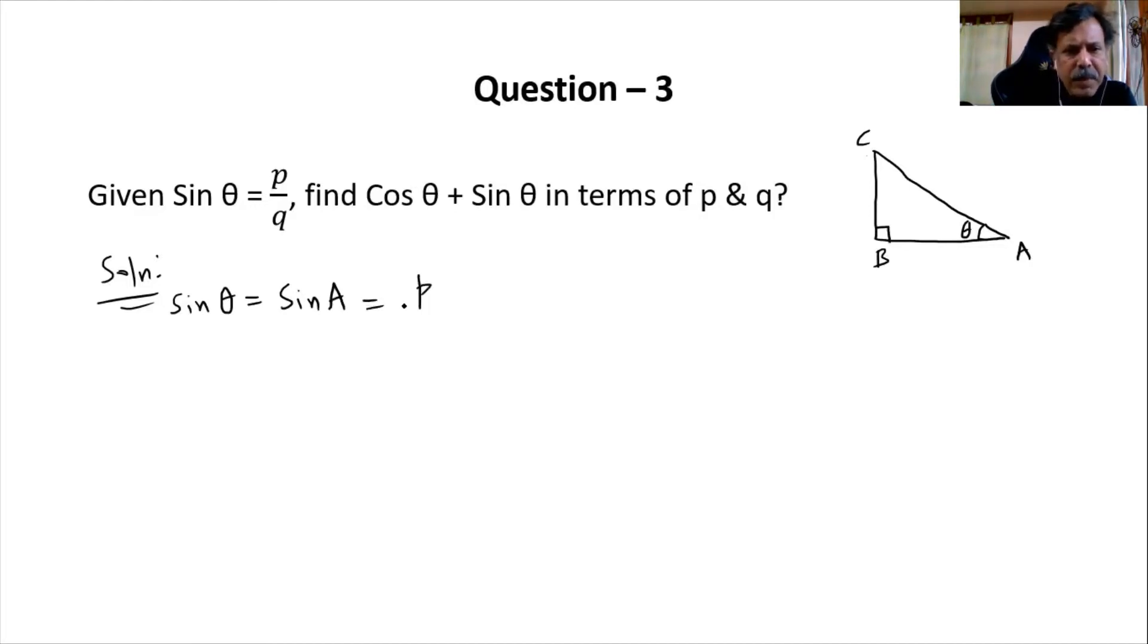That is given as p by q. Since it is given in terms of p by q, I can generally write that as px by qx. That means what is sine? Sine is opposite by hypotenuse. So opposite of this θ I can call it as p times x, hypotenuse I can call it as q times x.